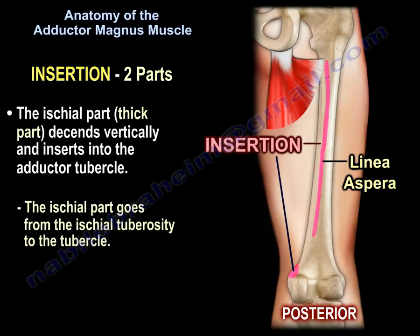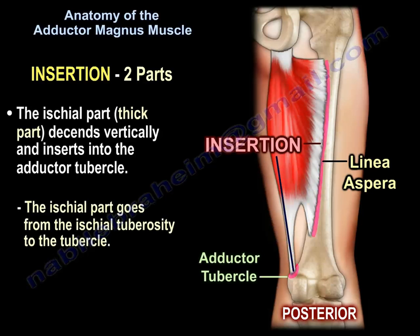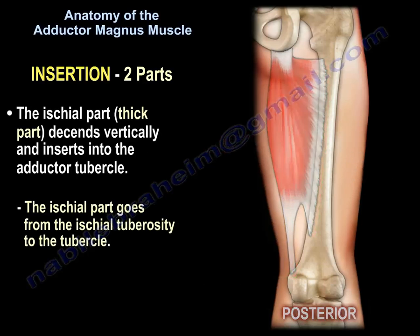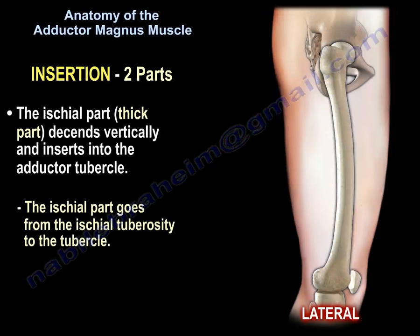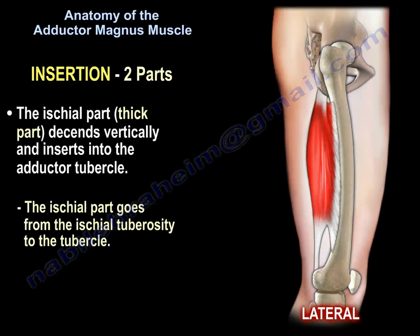Insertion of the ischial part: the ischial part is a thick part that descends vertically and inserts into the adductor tubercle. The ischial part goes from the ischial tuberosity to the adductor tubercle.